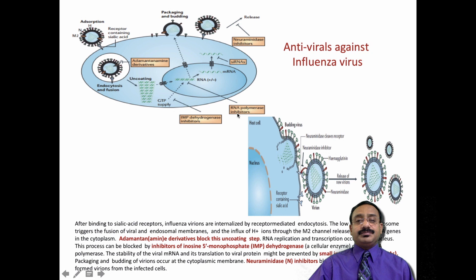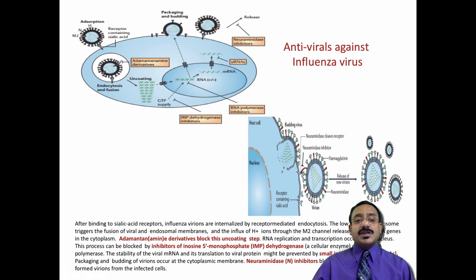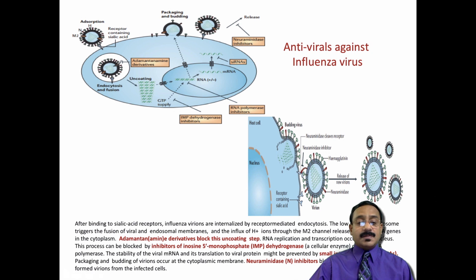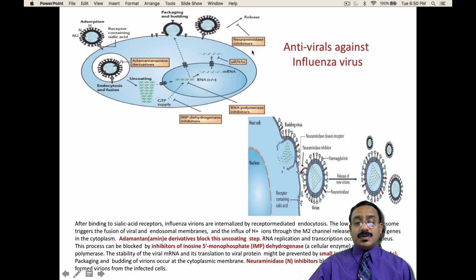The stability of this viral messenger RNA and its translation into protein can be prevented by small interfering RNAs produced by the human cell. These siRNAs are produced by the human cell to combat heterologous infectious material. Another intervention occurs after nucleic acid formation, when late proteins are being produced and packaging takes place.